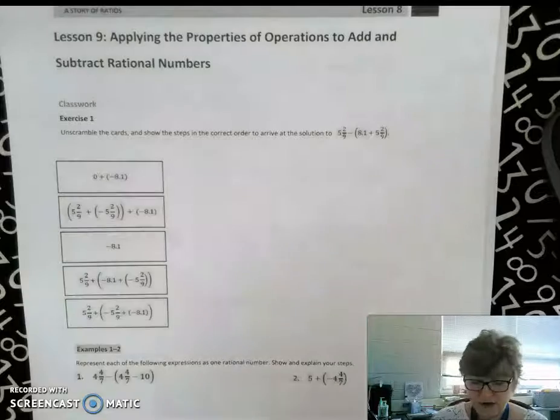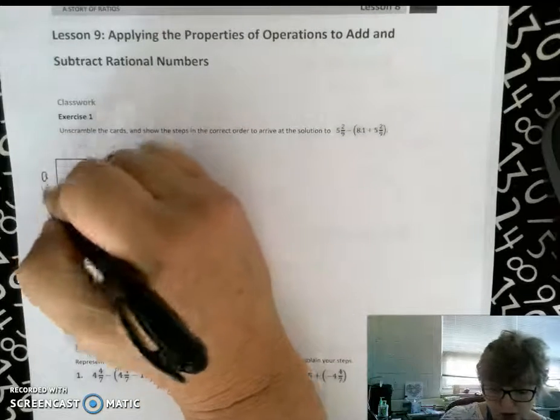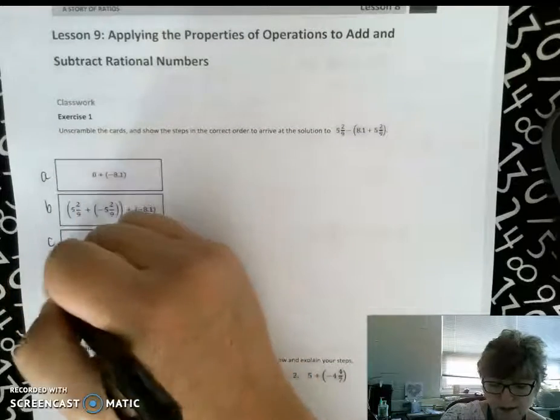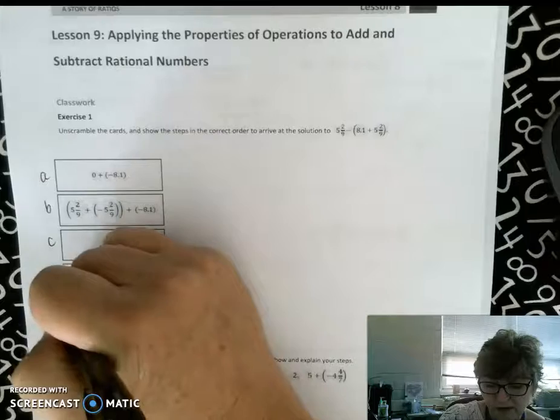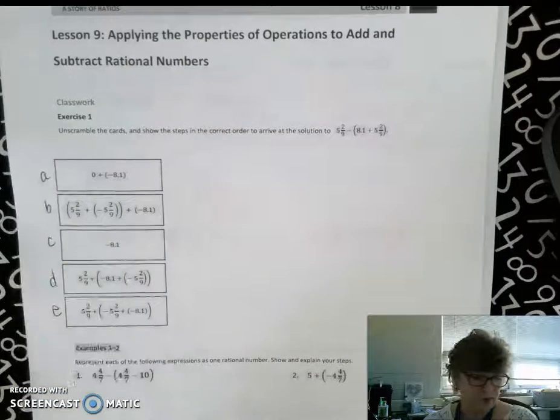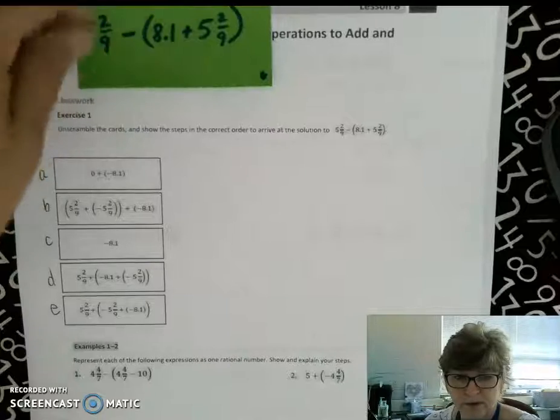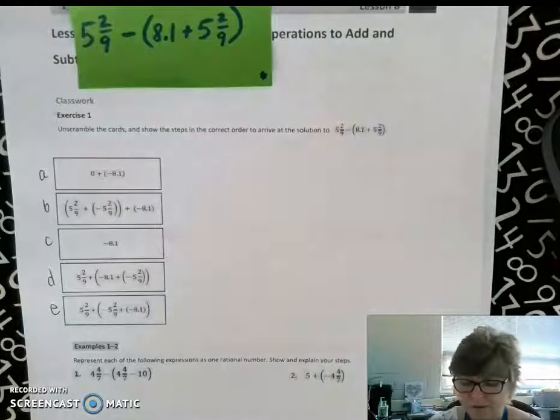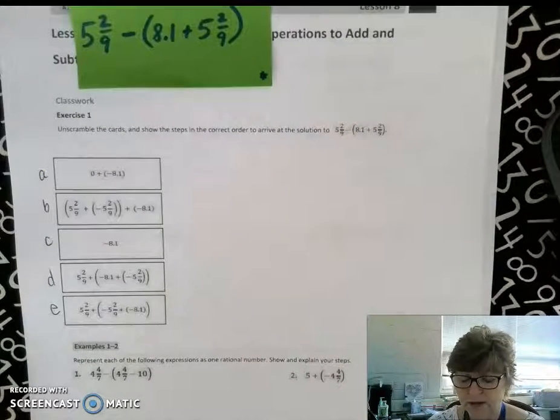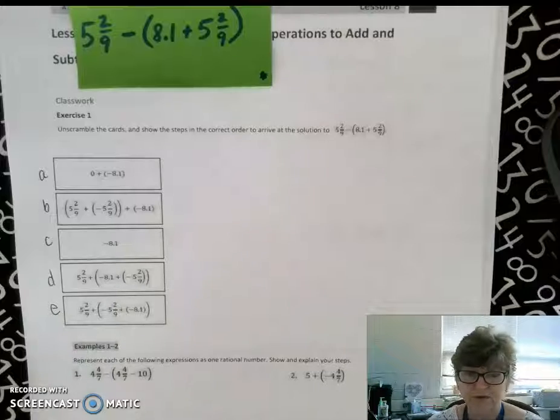Start off and label each box so that we can then turn around and put them in the correct order. I've actually taken our problem here and there is our problem: 5 and 2/9ths minus the sum of 8 and 1/10th plus 5 and 2/9ths.